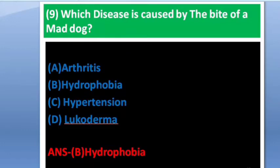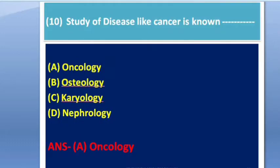Next question: Study of diseases like cancer is known as what? Options include Oncology, Osteology, Cardiology, and Nephrology. The answer is option A — Oncology.